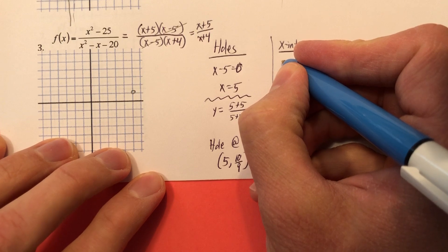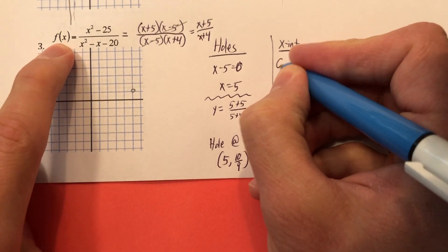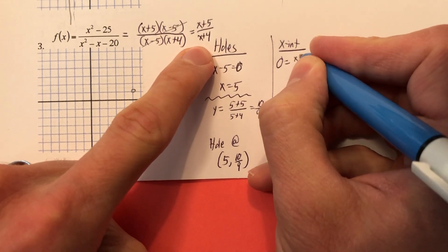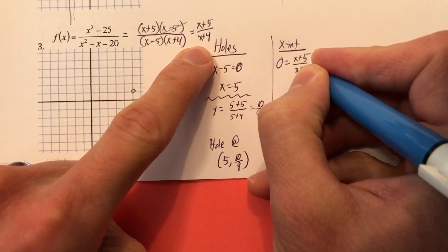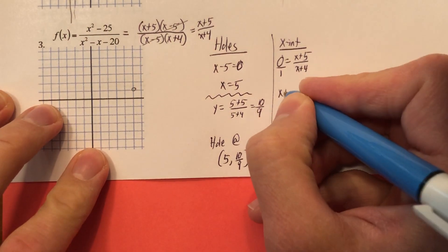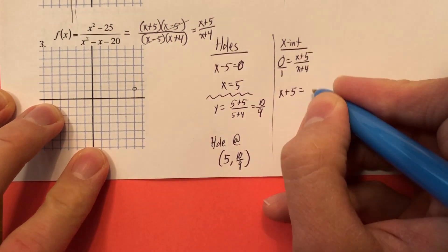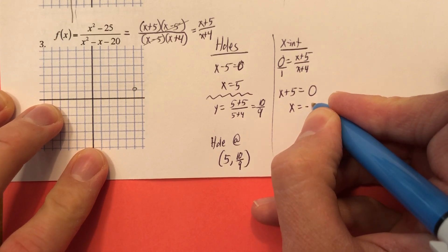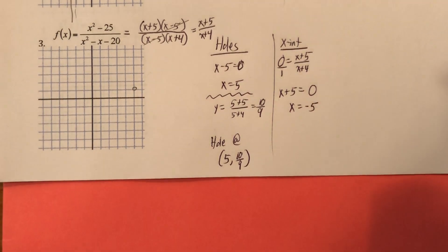X intercept is where Y equals 0. So this equals 0. And then we'd say, well, I don't want to use that. I don't want to use that. I'm going to use this one. So X plus 5 over X plus 4. And we're going to put this over 1 and cross multiply. 1 times X plus 5 is X plus 5. 0 times that is 0. So X equals negative 5. And that is my X intercept.